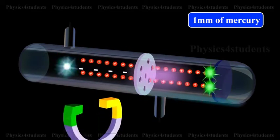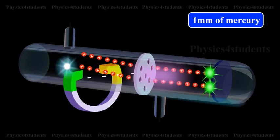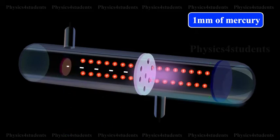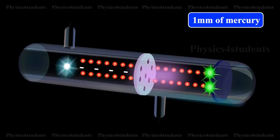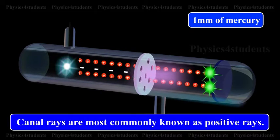From the nature of deflection produced by a magnetic field or electric field, these rays were found to be positively charged particles. Hence, canal rays are most commonly known as positive rays.